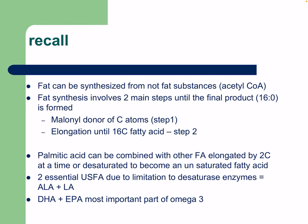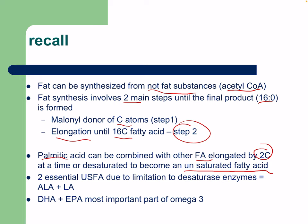Fats can be synthesized from non-fat substances like acetyl-CoA. Fat synthesis involves two main steps until the final product palmitic acid is formed: malonyl-CoA as the carbon donor in step one, and elongation to 16 carbons by fatty acid synthase in step two. Palmitic acid can be elongated by two carbons at a time or desaturated to form unsaturated fatty acids. There are two essential unsaturated fatty acids — linoleic acid and alpha-linolenic acid — as well as DHA and EPA as the most important omega-3 components.